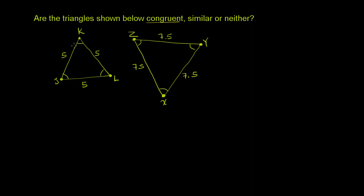So right over here, we see one side on the smaller triangle is 5, here it's 7.5. Actually, all of these sides here are 5, all of these sides are 7.5. So clearly, these two triangles do not have the same side lengths. So it is not congruent.